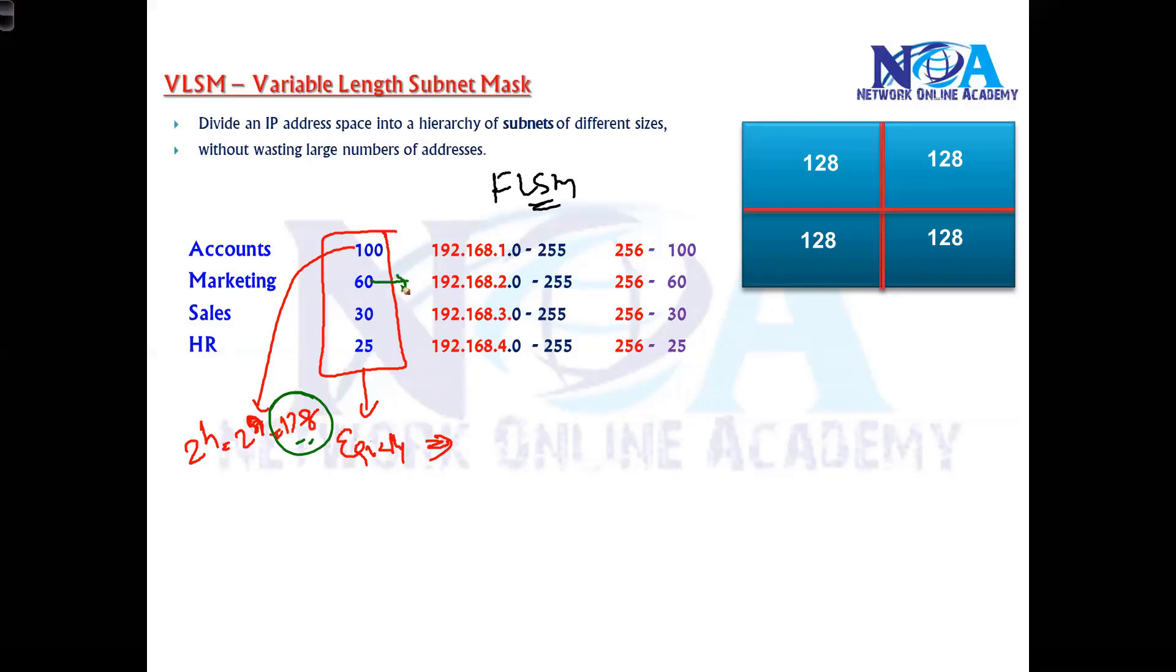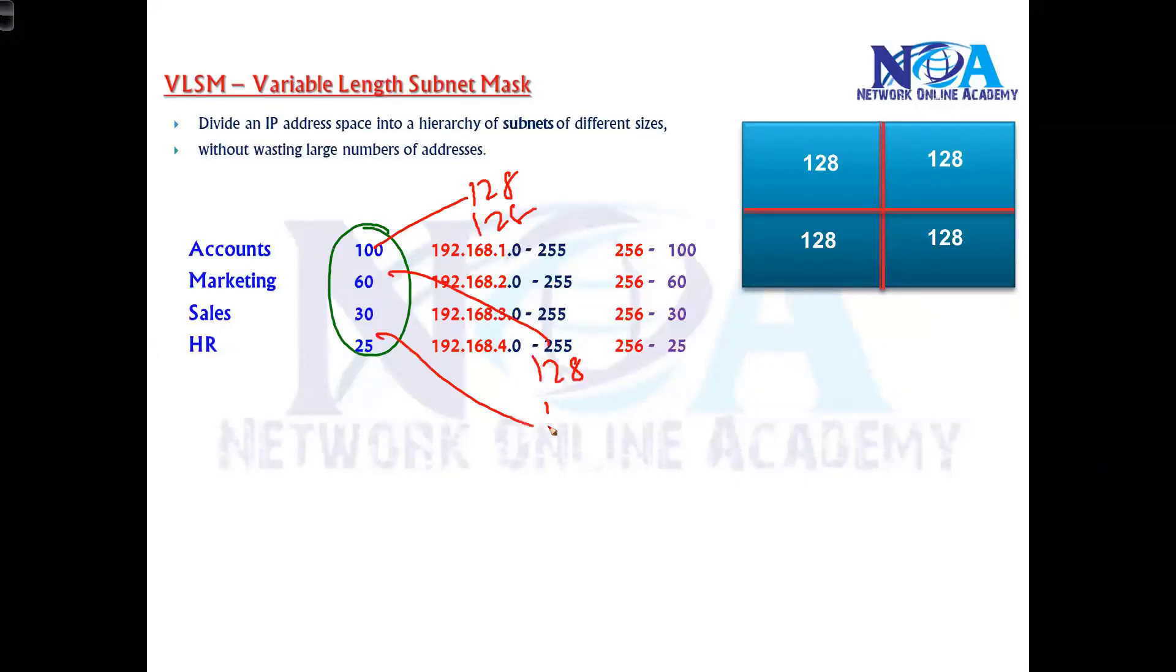I'll divide a network into 128, 128, 128, 128. Maybe I use one C class - like 192.168.1.0 subnets for two departments and 192.168.2.0 subnets for the other two, or maybe a B class or A class example.